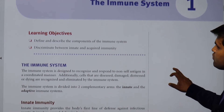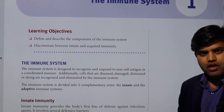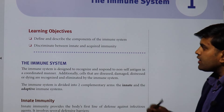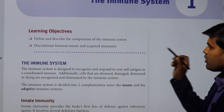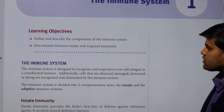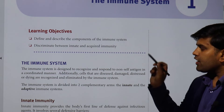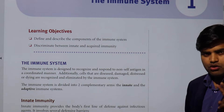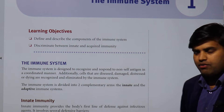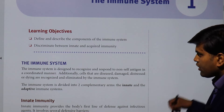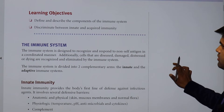The learning objectives from this lecture are to define and describe the components of the immune system, and to discriminate between innate and acquired immunity. These are the two objectives we have to fulfill by going through these lectures.